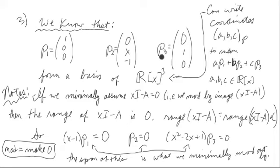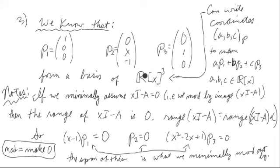Looking at that, we can write down the coordinates of Rx3 as tuples of three things. Those three things would be just the scalar coefficients of these vectors, and these scalars are going to be polynomials. Think of A, B, and C as being polynomials, yet they're like coordinates for Rx3. So we're going to represent Rx3 by a skewed coordinate system using these vectors, with coefficients representing the coordinates.